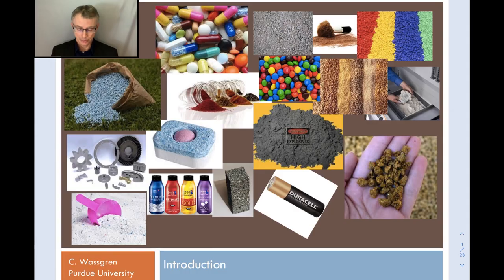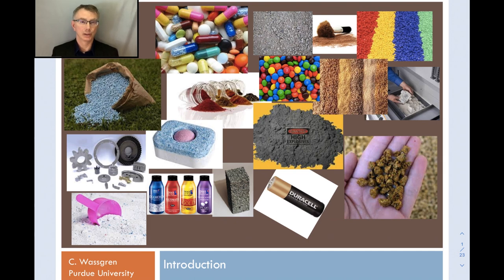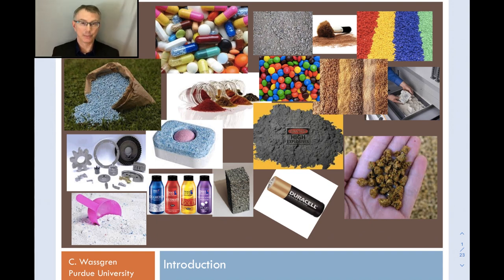On screen you'll see a number of different products — all particulate materials in some way or another. For example, we have some pharmaceutical materials; something like 90% or more of drug products in the pharmaceutical industry are in particulate form like a capsule or tablet. Here we have a granular fertilizer for agricultural applications, some powdered spices, a lot of food products in particulate form, and some M&Ms also in particulate form.